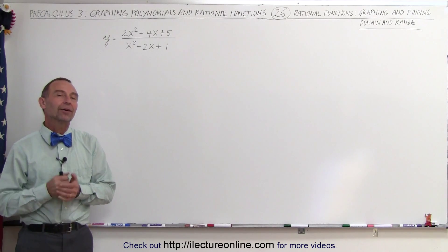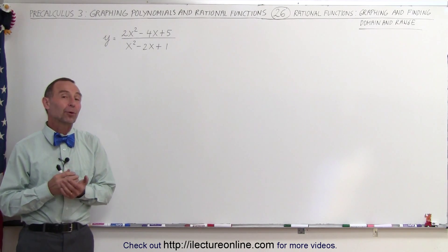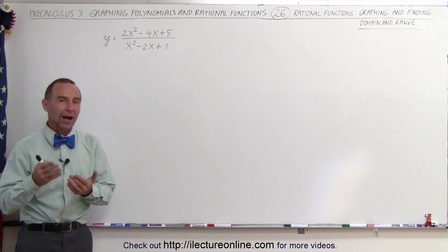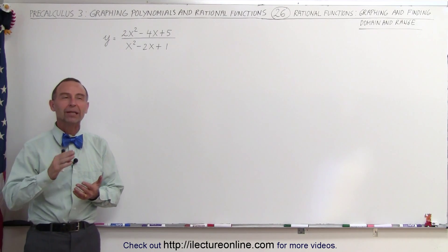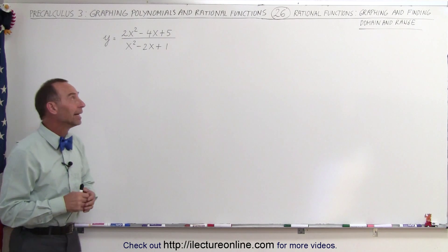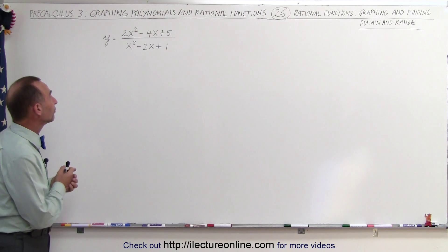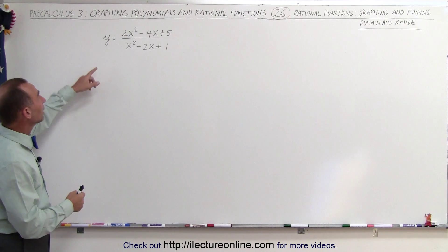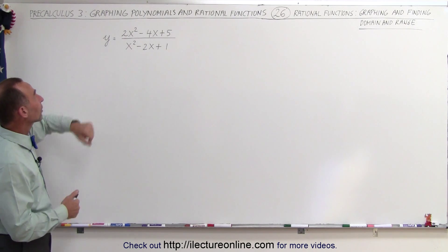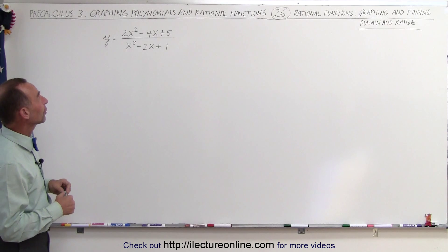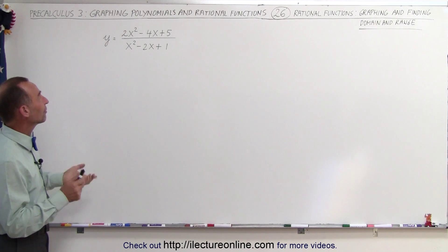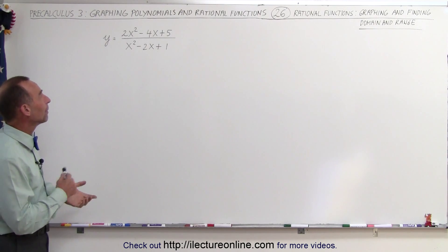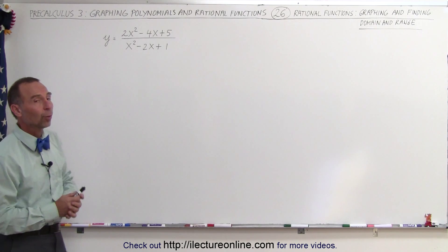Welcome to our lecture online. Our next example that we're going to graph and find the domain and range of is the following function. It's again a rational function: y equals 2x squared minus 4x plus 5, divided by x squared minus 2x plus 1.